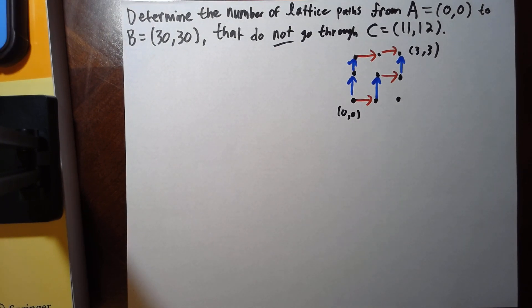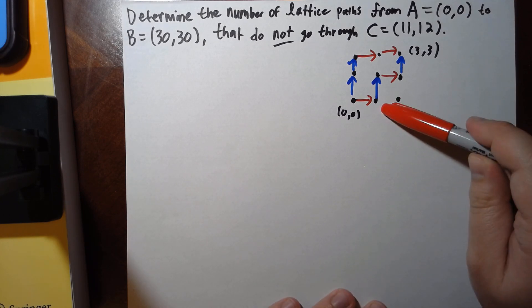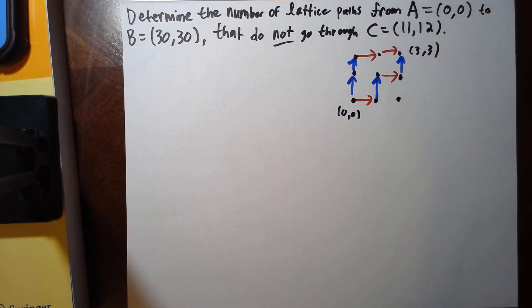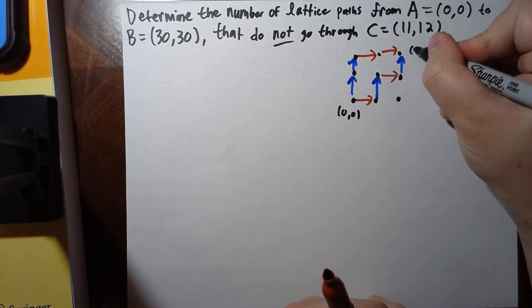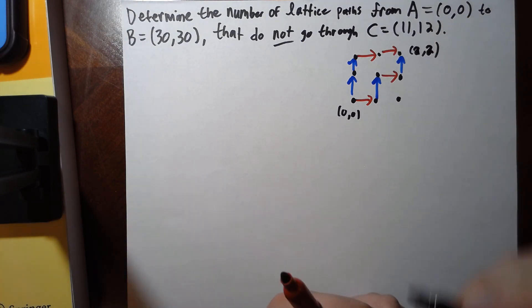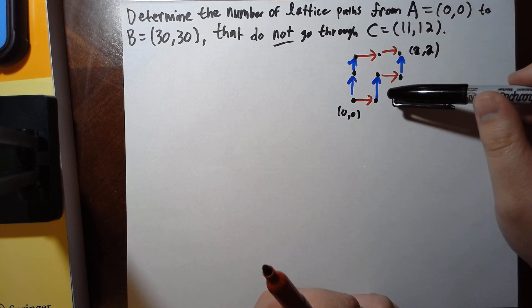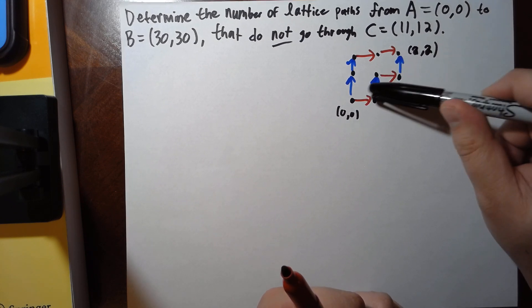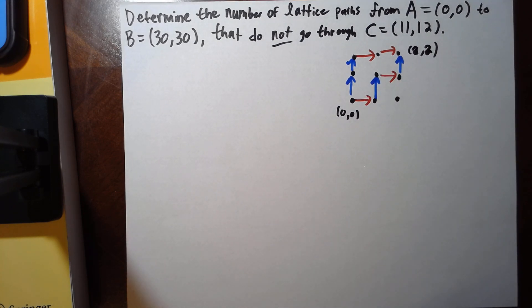But the idea is you always—oh this is (2,2) not (3,3), my bad—(2,2). The idea is you always have to go up two and you always have to go right two, and if you do a different order of going up and right that corresponds to a different path.